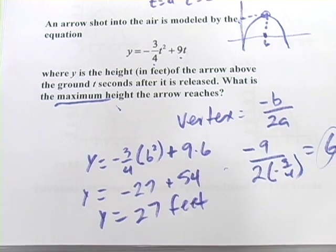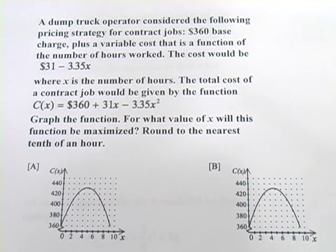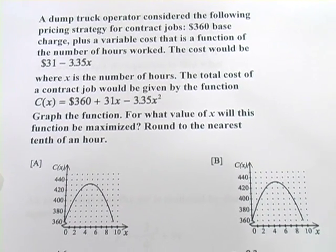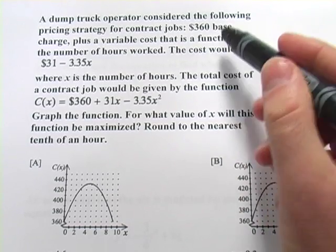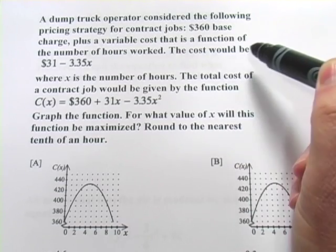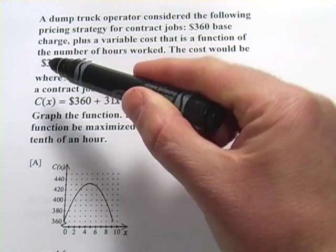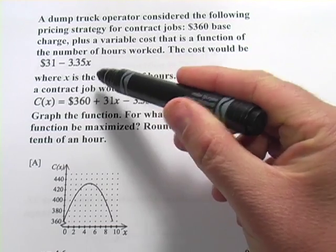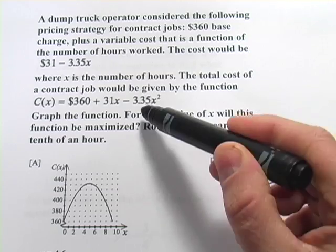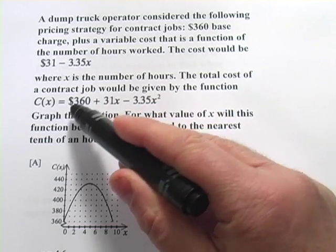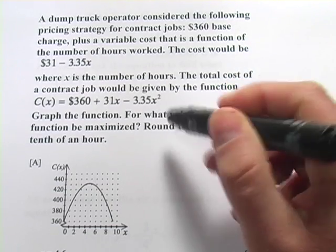All right, let's try one more. This one seems pretty complicated or looks pretty complicated, but it's not too bad. It says a dump truck operator considered the following pricing strategy for contract jobs. $360 base charge plus a variable cost that is a function of the number of the hours worked. The cost would be $31 minus 335 times x, where x is the number of hours. The total cost of a contract job would be given by this function. This is the one we need to pay attention to. $360 plus 31x minus 3.35x squared. So there's a quadratic.